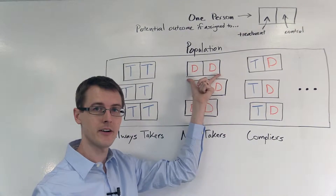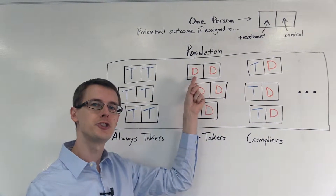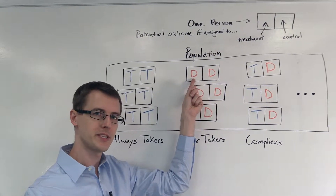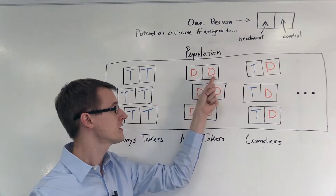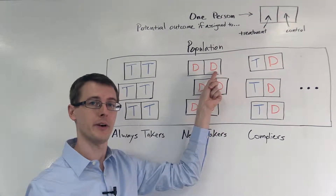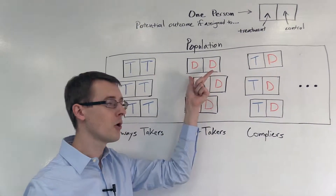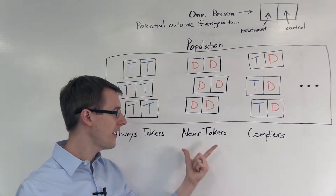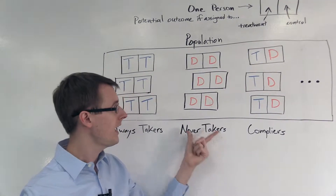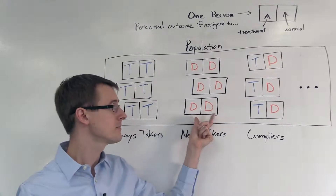This person here — when they're assigned to the treatment group, they don't take the treatment. When they're assigned to the control group, they also don't take the treatment. So regardless of what they're assigned to, they don't take the treatment. Therefore, they are a never taker. They never take the treatment. And there are other people in our population who could also be never takers.